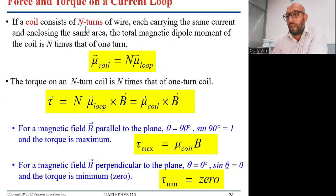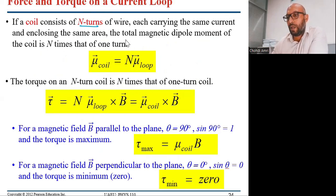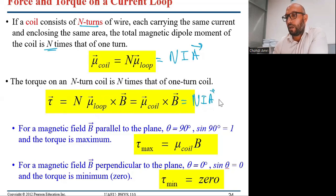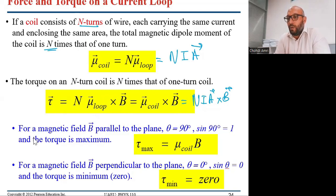For a coil with N turns, each carrying the same current and enclosing the same area, the total magnetic dipole moment is μ_coil = N·μ_loop = NIA. The total torque on the coil is τ = N·μ_loop·B = NIAB sinθ. When B is parallel to the plane (θ = 90°, sinθ = 1), the torque is maximum. When B is parallel to the normal (θ = 0°), the torque is minimum (zero).